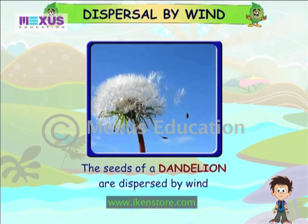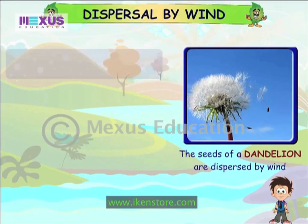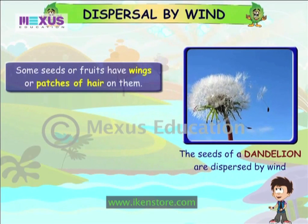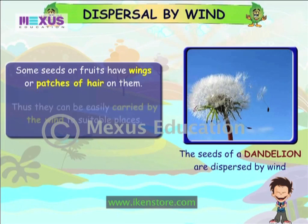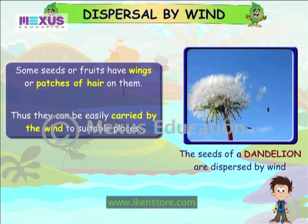Dispersal by wind. Some seeds or fruits have wings or patches of hair on them. Thus, they can be easily carried by the wind to suitable places.